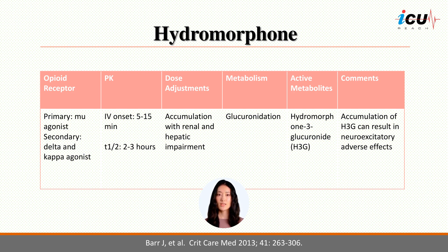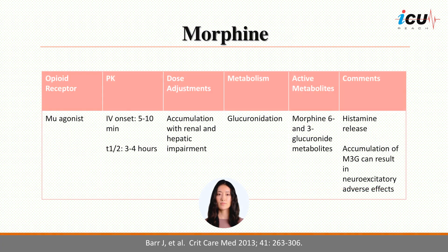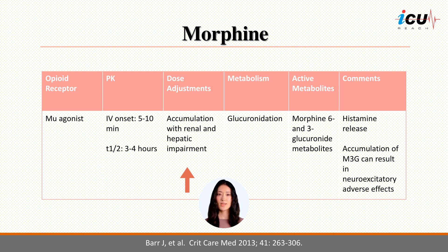Approximately 37% of hydromorphone is metabolized to hydromorphone-3-glucuronide, which is a neuroexcitatory metabolite that accumulates in renal failure. Morphine is a mu agonist that undergoes glucuronidation. It has a similar half-life compared to hydromorphone. In renal impairment, with a creatinine clearance less than 60 mL per minute, reduce the dose by 25–75% and avoid in patients with a creatinine clearance less than 15 mL per minute. Morphine can accumulate in hepatic impairment; however, there are no specific dose adjustments, but keep in mind that the half-life and AUC are increased in cirrhosis.